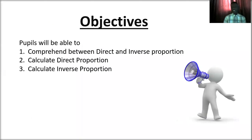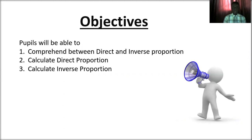The objectives of this lesson are: number one, that the pupils are able to comprehend the difference between direct and inverse proportion — do not forget that indirect proportion can also be called inverse proportion — and also, the children are going to learn how to calculate direct and inverse proportion.